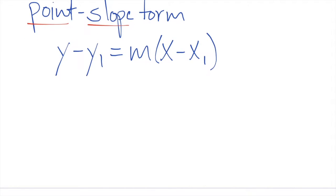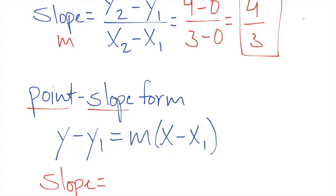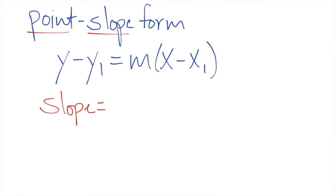We know what a slope, we have a slope already. Slope equals four over three, that's what we got here. And now we need a point.